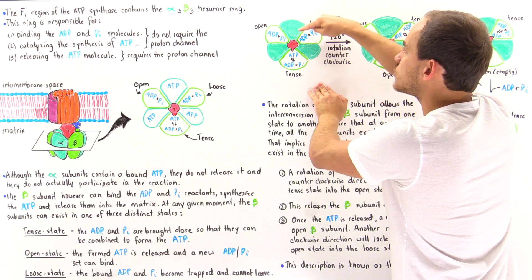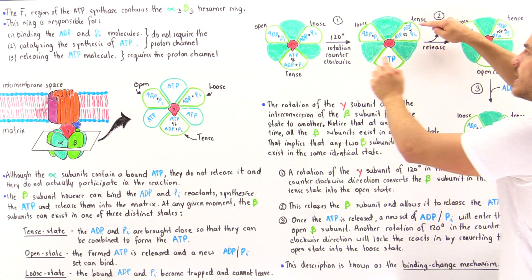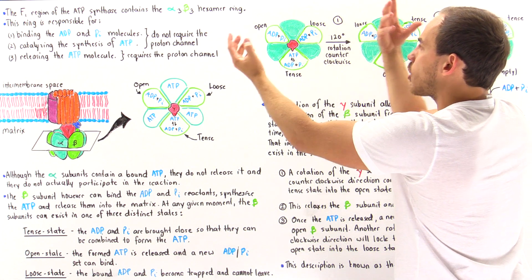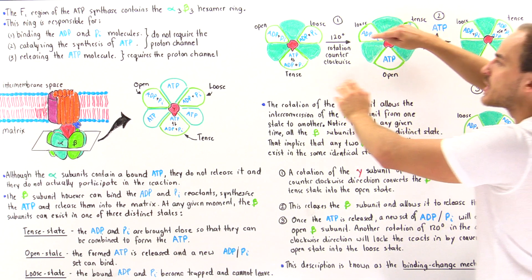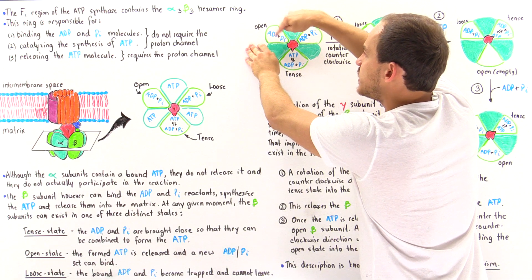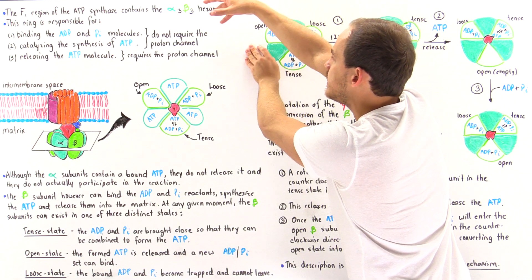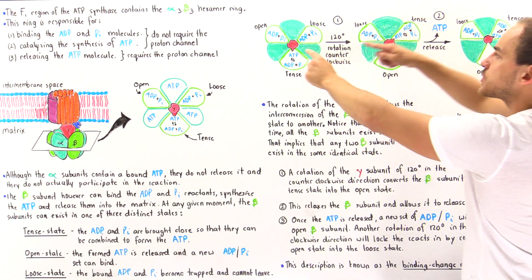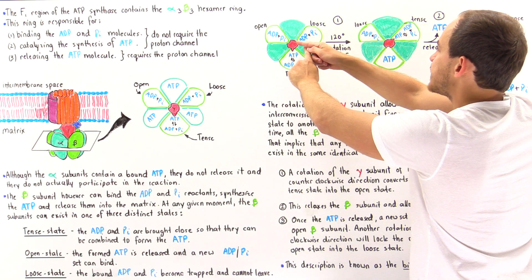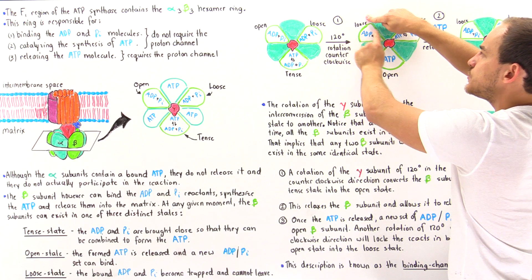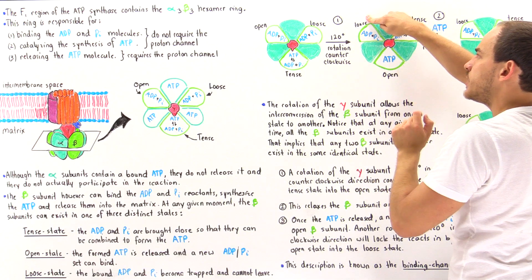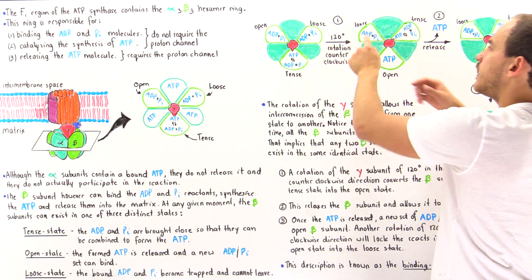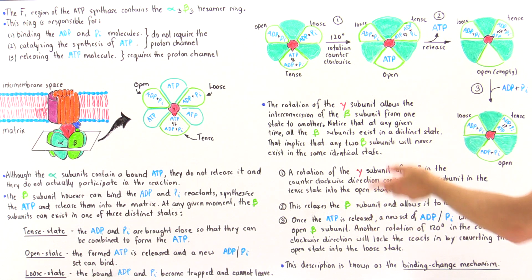When a subunit transitions from the Loose state to the Tense state, the two reactants are brought close enough to begin producing ATP. In the Open state, reactants can freely enter and exit the subunit, but once the conformational change to Loose state occurs, the reactants become trapped — though still not close enough to undergo catalysis and form ATP.